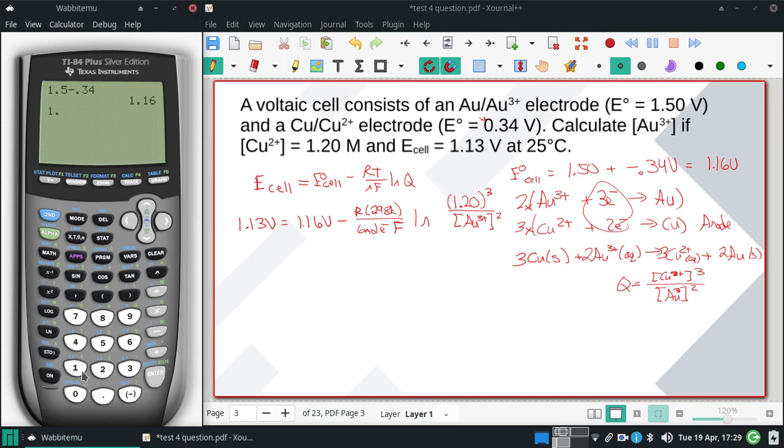So starting with everything on the left, 1.13, and I'll subtract the 1.16, and I'm going to get rid of that negative. So I'll multiply by negative 6 and by Faraday's constant, 96,485. Then I'm going to divide by my R, 8.314, and by the 298. That value there should be equal to the natural log of the 1.2³ divided by the gold².